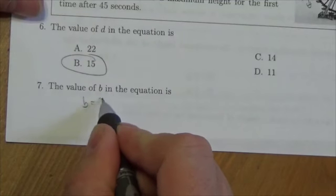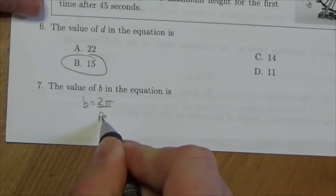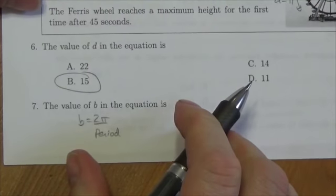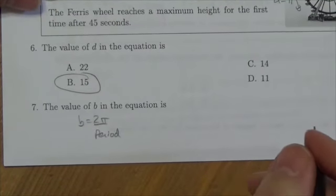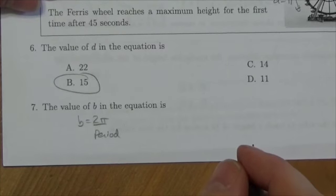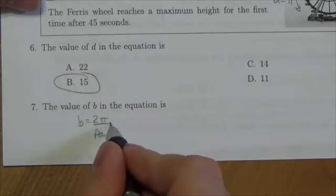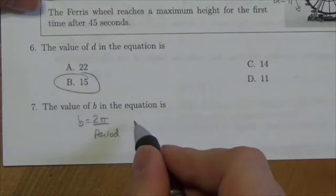Because I know that b is equal to 2π over the period of this motion here. And if you don't know that off the top of your head, you really do need to memorize that. You'd be far better off just having that information logged away instead of having to look it up.